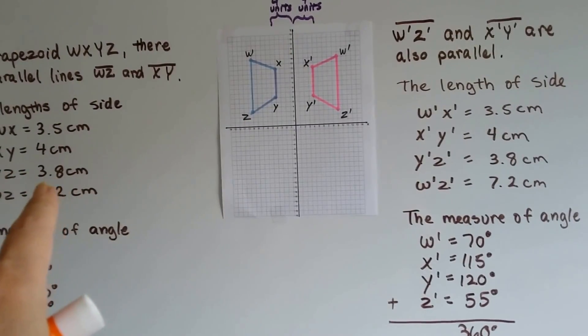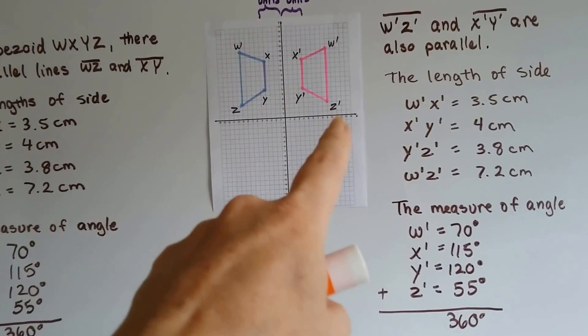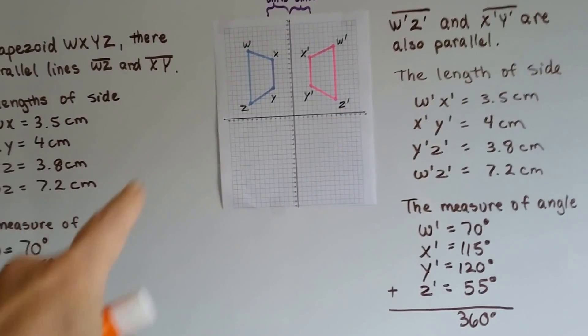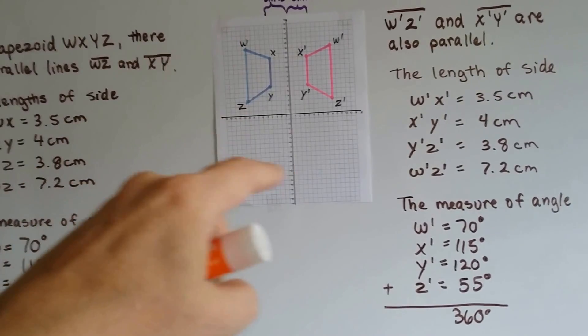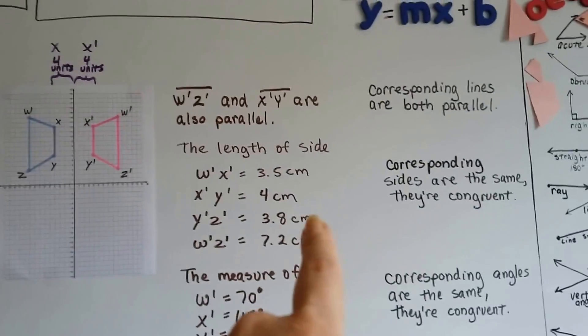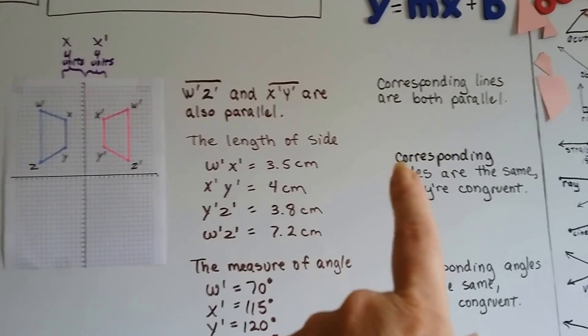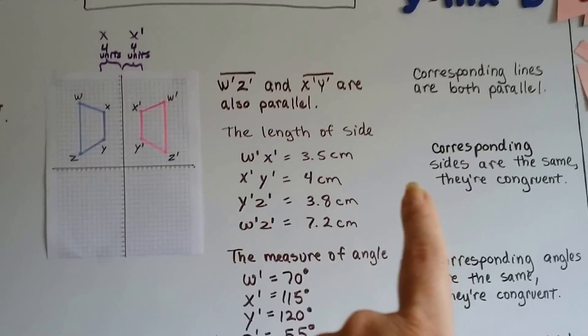Y, Z is 3.8 centimeters right here, and this is 3.8 centimeters. W, Z is 7.2 centimeters, and so is W prime, Z prime. All the lengths are the same. So not only does it have corresponding lines that are parallel, but corresponding sides are the same. They're congruent.